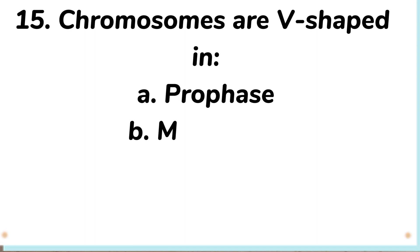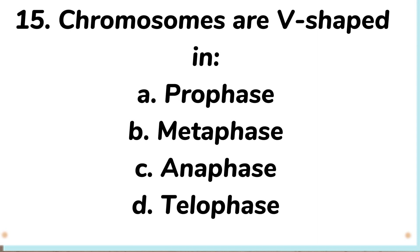Number 15. Chromosomes are V-shaped in: A prophase, B metaphase, C anaphase, D telophase. Answer: C anaphase.